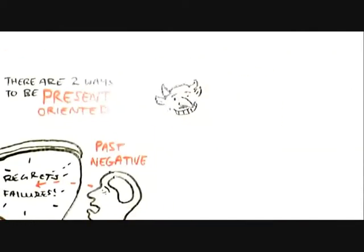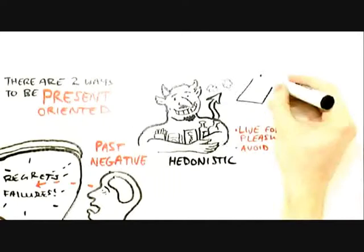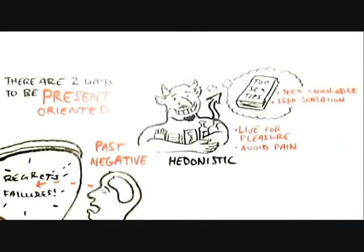There are two ways to be present-oriented. The most obvious is to be hedonistic, that you live for pleasure and you avoid pain. You seek novelty, you seek sensation.